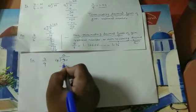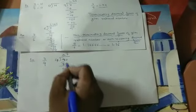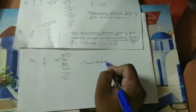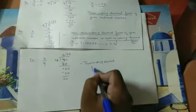Consider one more example: 3 divided by 4. Carrying out the division — 3 divided by 4: first it becomes 0, we write the decimal point. 4 sevens are 28, remainder becomes 2; bring down 0, 4 fives are 20, remainder becomes 0. So this is a terminating decimal form.